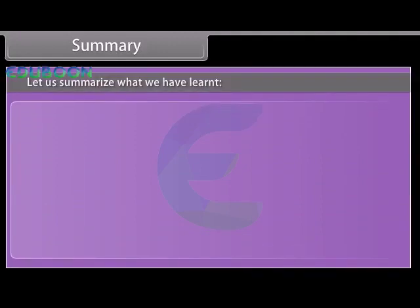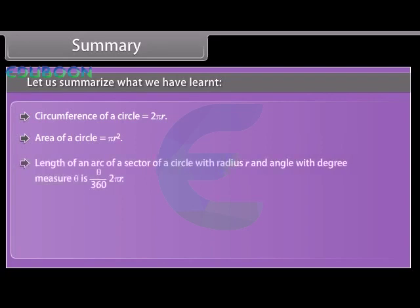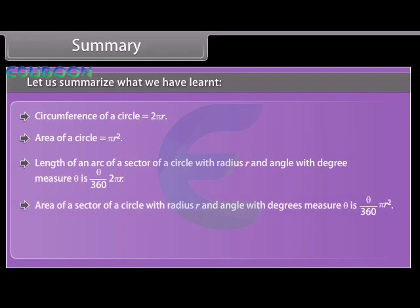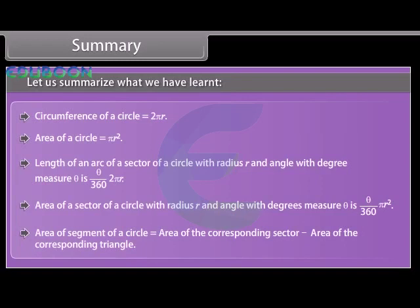Summary: Circumference of a circle = 2πr. Area of a circle = πr². Length of an arc of a sector with radius r and angle θ (in degrees) = (θ/360) × 2πr. Area of a sector with radius r and angle θ (in degrees) = (θ/360) × πr². Area of a segment of a circle = area of the corresponding sector minus area of the corresponding triangle.